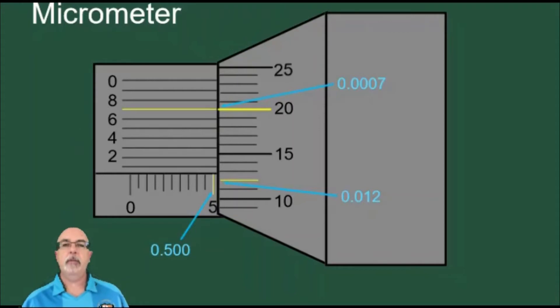Let's start making our reading of this measurement. First thing we do is look at the main scale and going from left to right, find the last line that we can see before the lines disappear underneath the thimble. The last line we see is this one for the five.